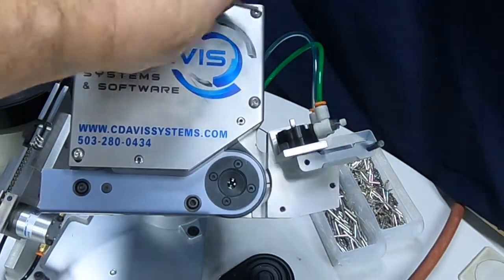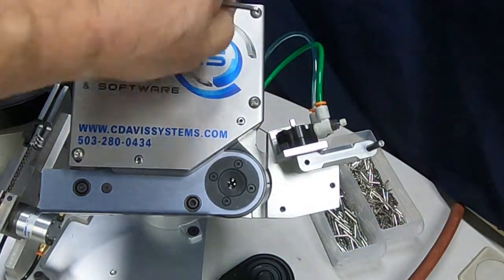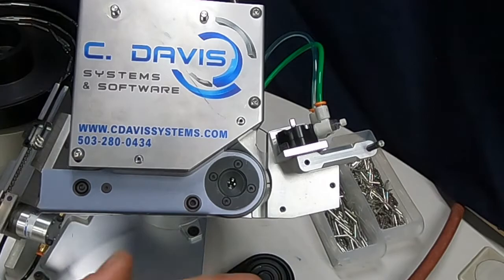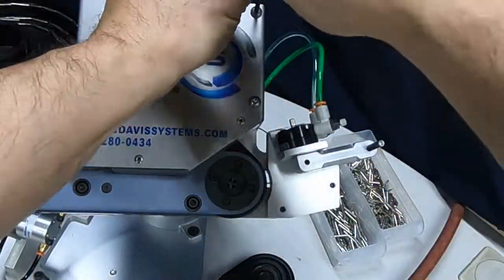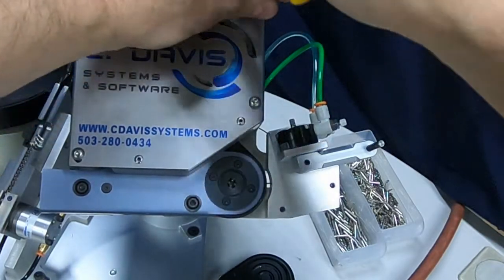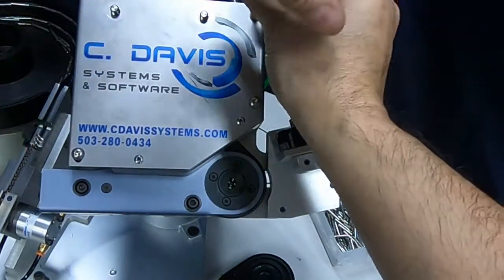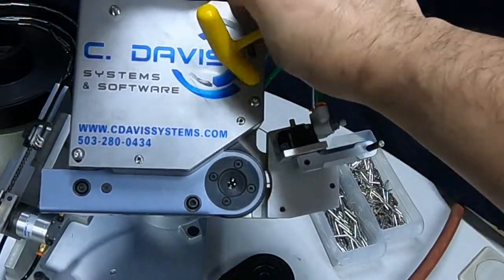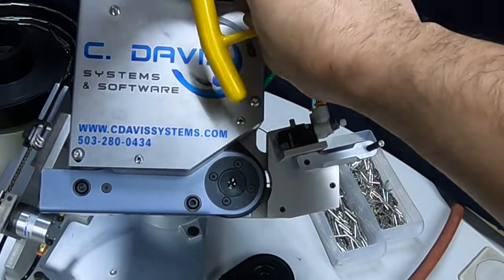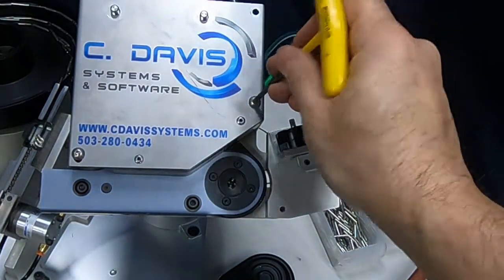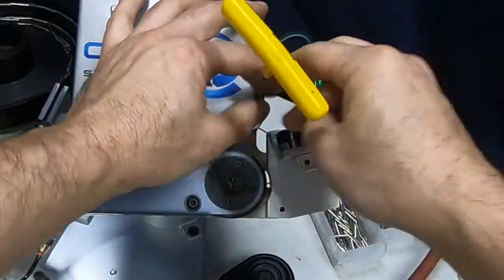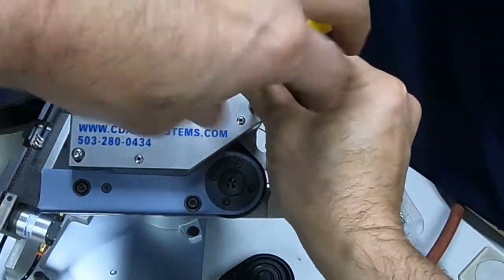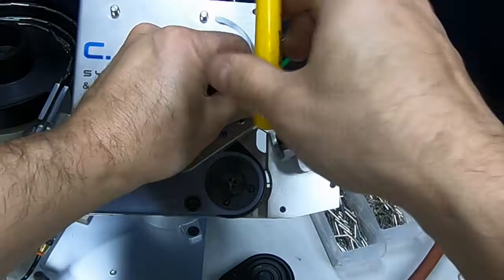These are TE-16 Deutsch pins and sockets. And the specced-correct tool to crimp them is the HDT-48, which is a really great tool. It's robust. One of the reasons that we automate hand tools instead of just using the off-the-shelf pneumatic crimpers and feeding them is because these tools are much more robust. Back in the early 90s, Kurt Davis, the founder of this company, attempted to automate the off-the-shelf pneumatic tools.